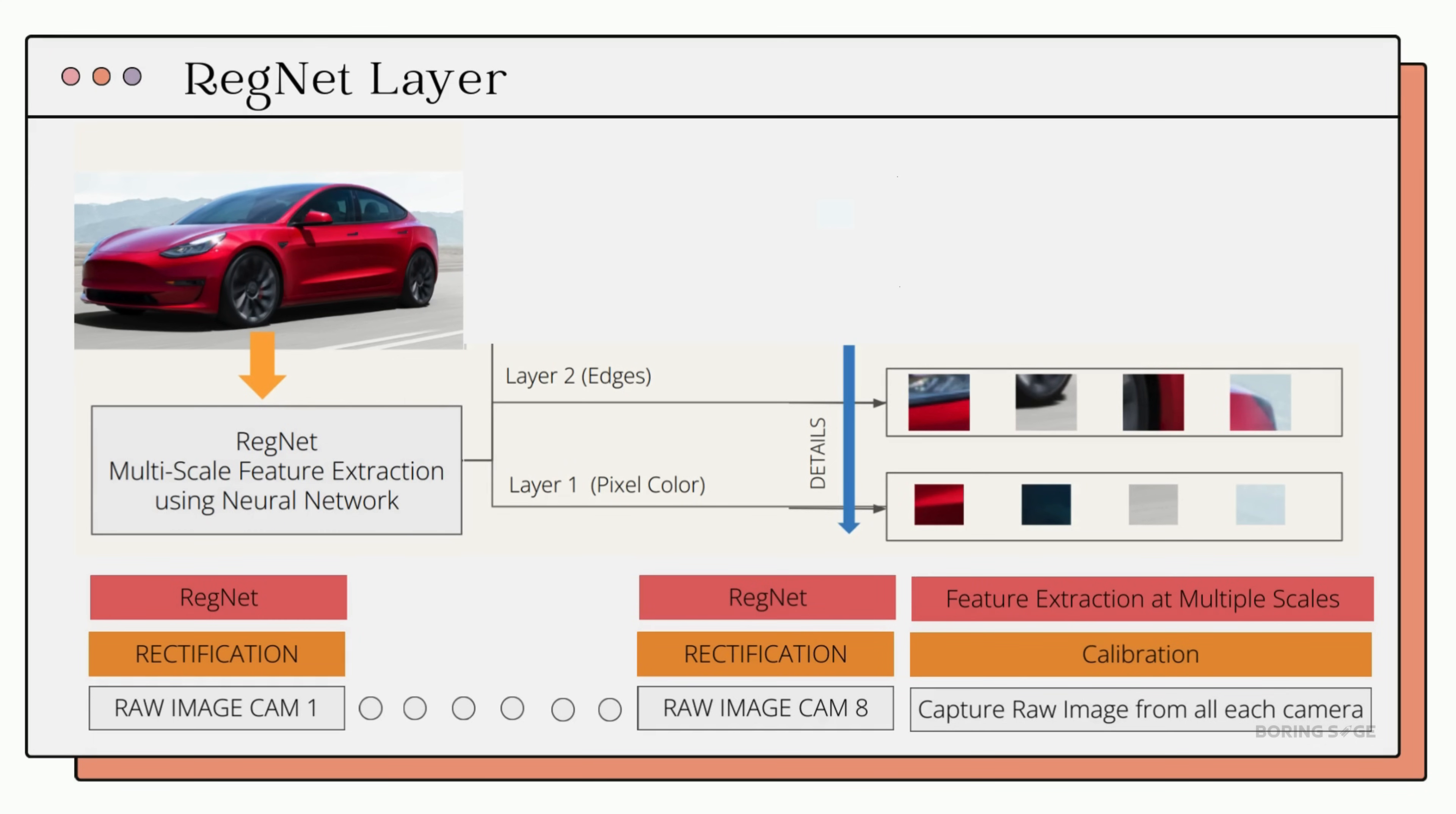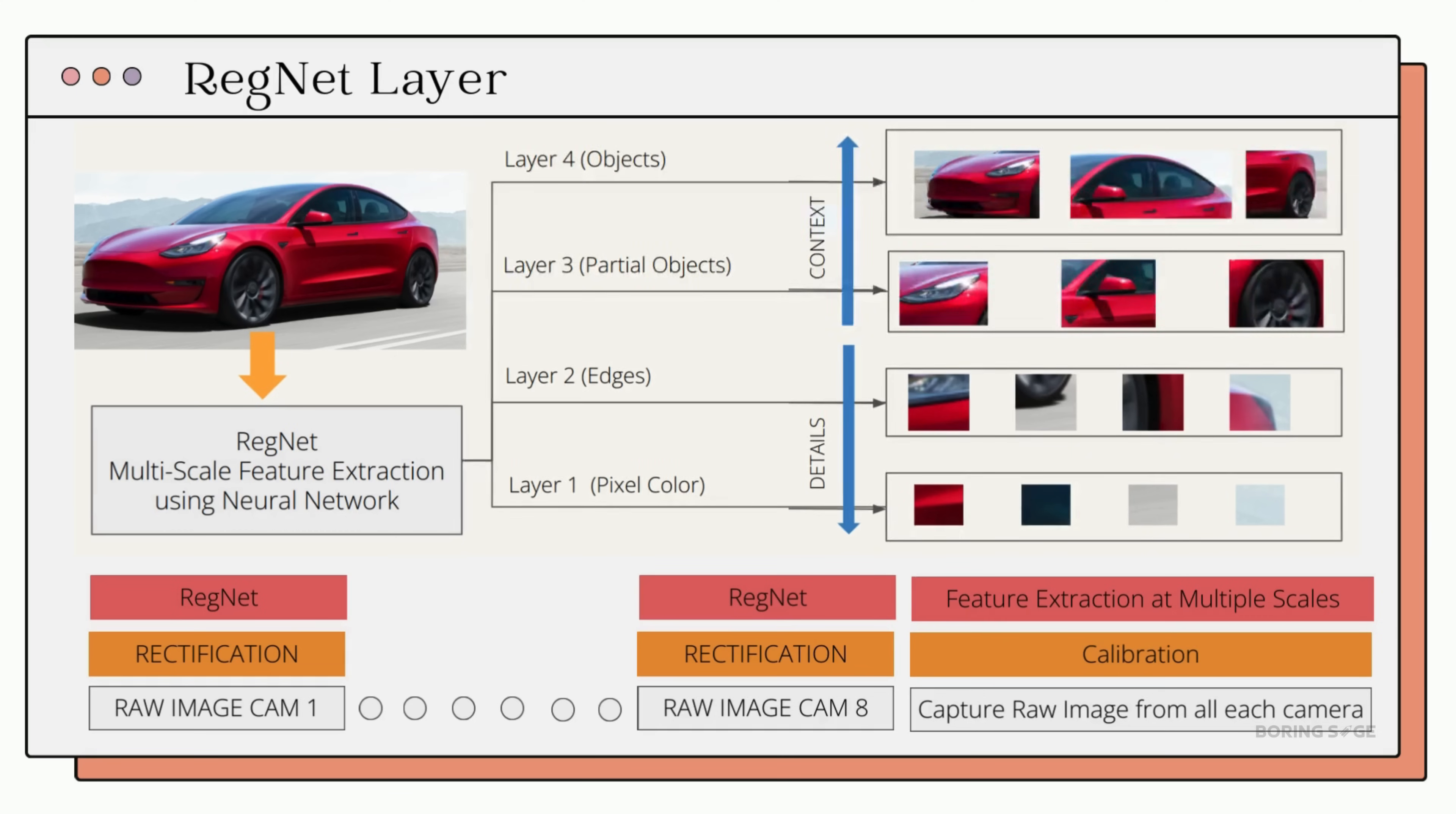At a smaller scale, RegNet identifies simple things like color and texture, which is what the lower layers on the right of the neural network focus on. But as we move deeper, we can see the upper layers - RegNet here can start to recognize more complex objects like cars or pedestrians. This level of detail across this scale is crucial for the car to understand its surroundings and make precise decisions about how to respond to each of these scenarios.